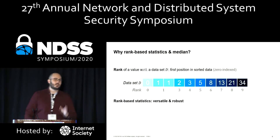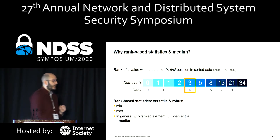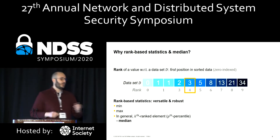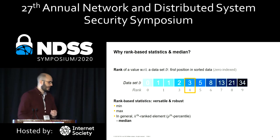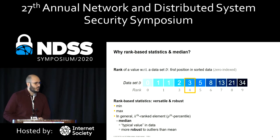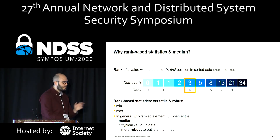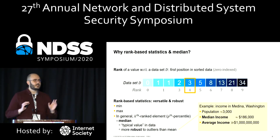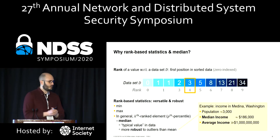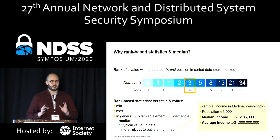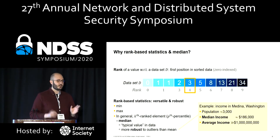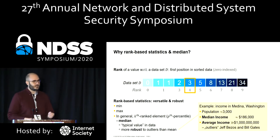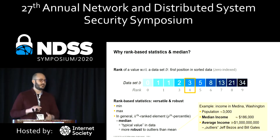Rank-based statistics are versatile and robust. They can be the minimum value, the maximum value, or generally any k-th ranked element — also called the p-th percentile. One special value is the median, the 50th percentile, which is considered a typical value and is more robust to outliers. For example, in Medina, Washington with around 3,000 inhabitants, the median income is $168,000, but the average income is much more than $1 billion because of outliers like Jeff Bezos and Bill Gates. That's why you mostly see median income in statistics.